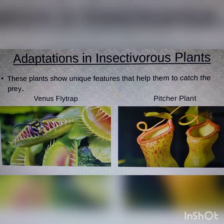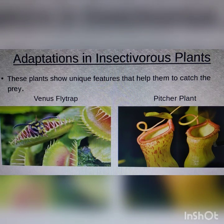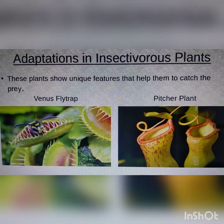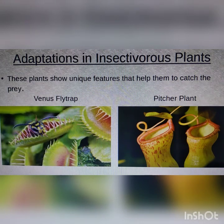Now coming to the case of the pitcher plant. It is shaped like a pitcher, and at the edges it secretes a slippery substance. When an insect comes in contact with it, they slip and fall into the pitcher and cannot come out — so they are trapped. The plant then takes nutrition from the trapped insect. These are the adaptations found in insectivorous plants.